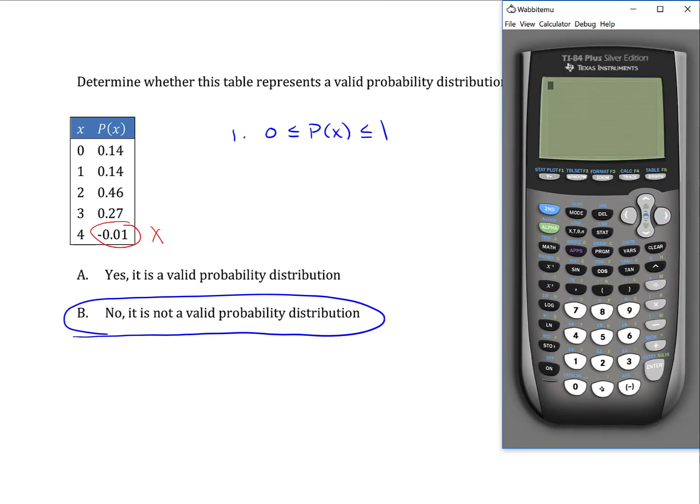If you happen to take a look at the sum of the probabilities in this particular case, if we add them all together, so this one would be plus negative 0.01, we do get exactly 1.